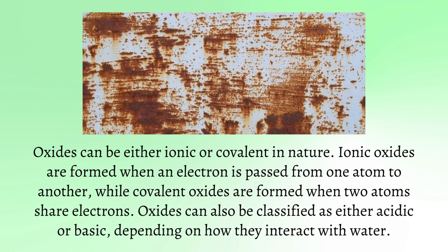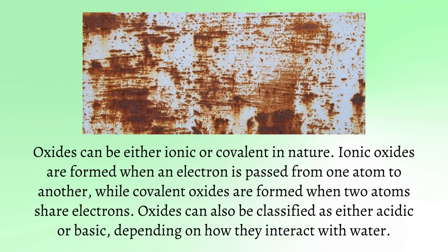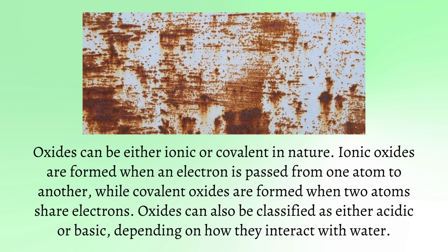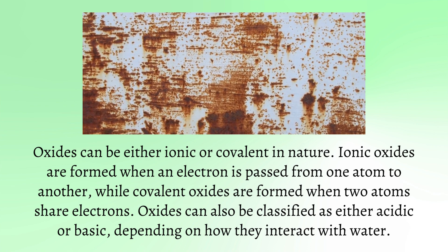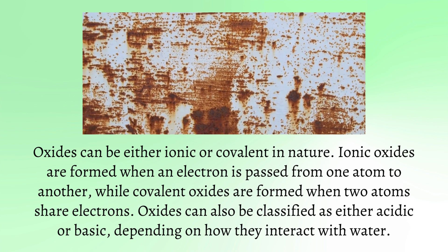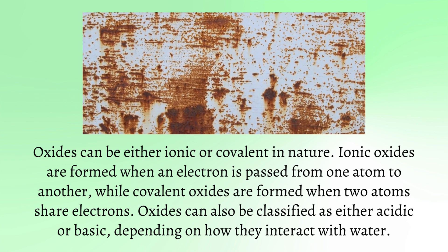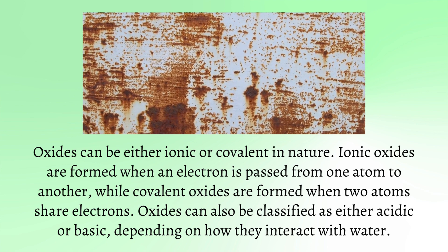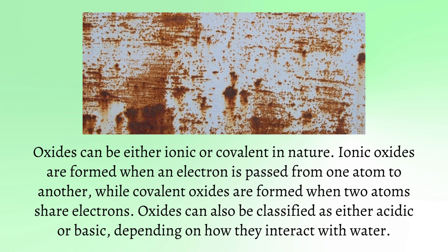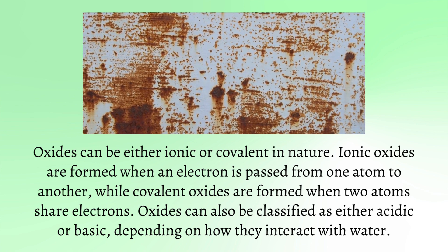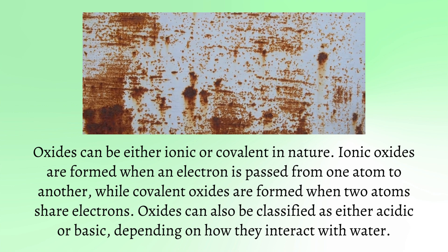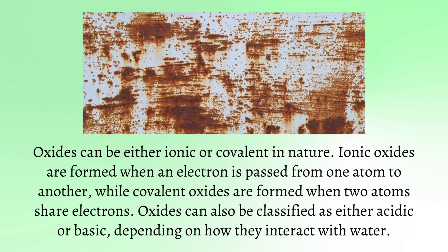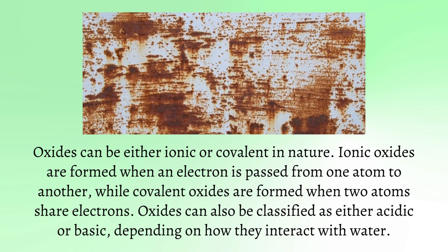Oxides can be either ionic or covalent in nature. Ionic oxides are formed when an electron is passed from one atom to another, while covalent oxides are formed when two atoms share electrons. Oxides can also be classified as either acidic or basic, depending on how they interact with water.